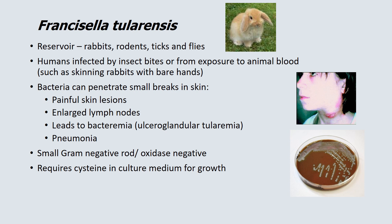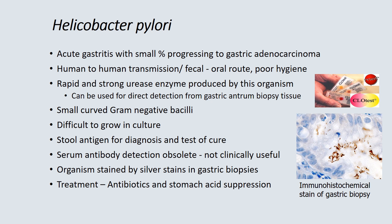Francisella tularensis has a reservoir in rabbits, rodents, ticks, and flies. Humans are infected by insect bites or exposure to animal blood, such as skinning rabbits with bare hands, as the bacteria can penetrate small breaks in the skin. It can cause painful skin lesions, enlarged lymph nodes, and bacteremia, forming the most common form known as ulceroglandular tularemia. It is a small gram-negative rod, oxidase negative, and importantly requires cysteine to grow, so chocolate agar or other cysteine-containing medium must be included.